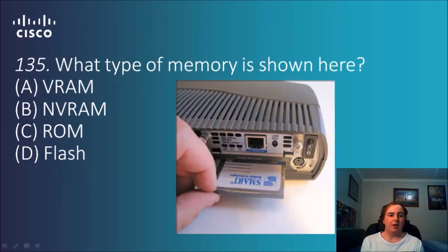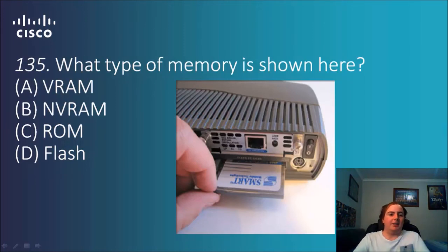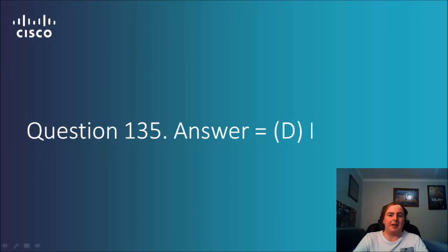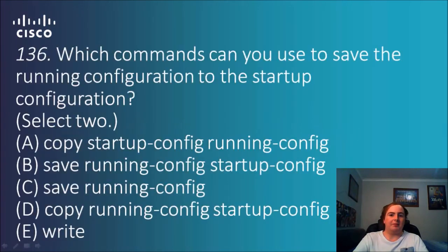Question 135: What type of memory is shown here? Options: NVRAM, VRAM, ROM, flash. ROM is inside the device, and NVRAM and VRAM are part of the motherboard. That leaves flash, which is normally external to the device — that's a big giveaway. The answer is flash.